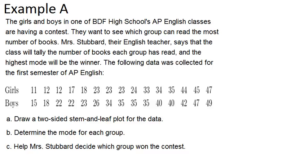Example A. The girls and boys in one of BDF High School's AP English classes are having a contest to see which group can read the most number of books. Mrs. Stubbard, their English teacher, says the class will tally the number of books each group has read, and the highest mode will be the winner. The following data was collected for the first semester of AP English. Draw a two-sided stem and leaf plot for the data and determine the mode for each group, then help Mrs. Stubbard decide which group won. The group that wins is the group with the highest mode.